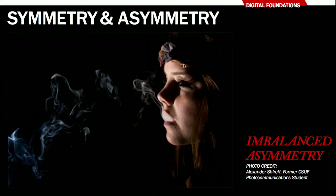Another imbalanced asymmetric photograph: the focal point is completely on the right side, with almost nothing happening on the left except smoke leading out of the frame. Black is our negative space here — I know I said darker values can have more weight, but in this case the black is negative space, and the lit positive space has dominance in setting the weightiness. Most of the weight is on the right with very little counterpoint, making this clearly an imbalanced asymmetric photograph.